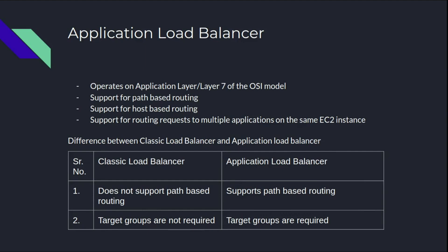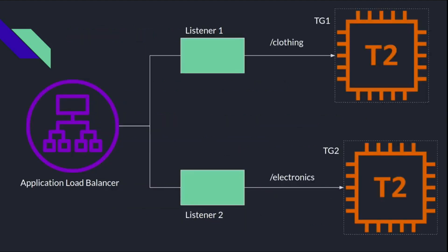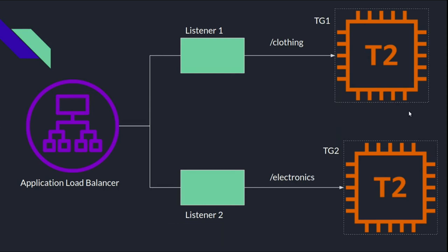This is the architecture we are going to build by the end of this video. Suppose you have an e-commerce application with various microservices installed on different EC2 instances — one EC2 instance handles clothing requests and another handles electronics microservices. We will configure an application load balancer with listener rules to route incoming requests to the appropriate target group.